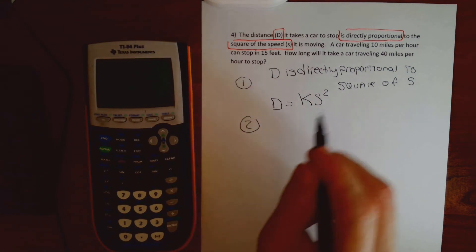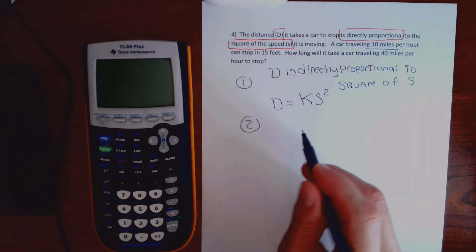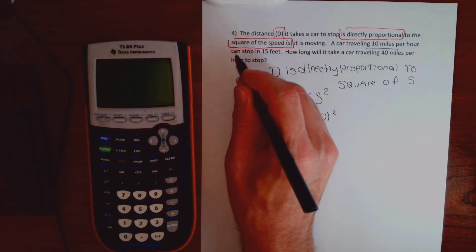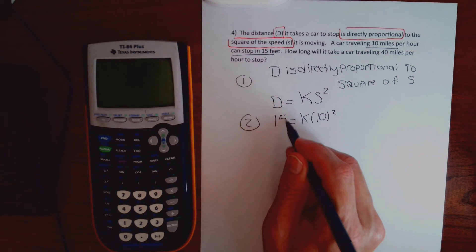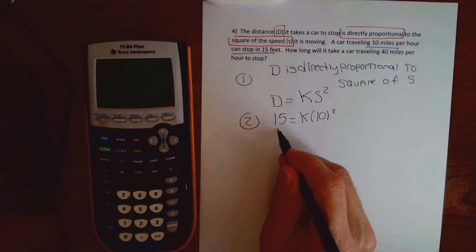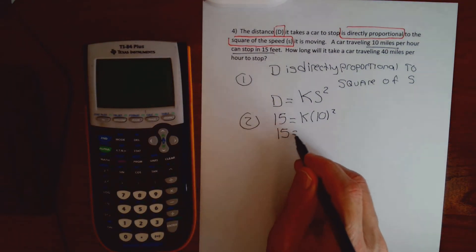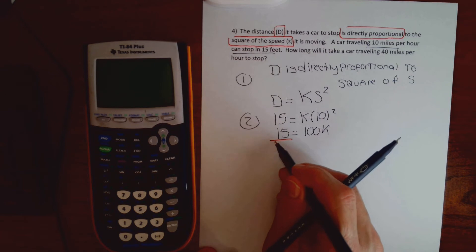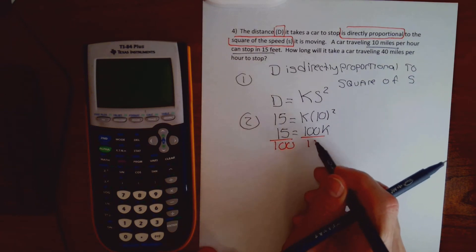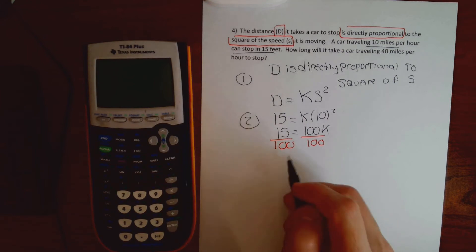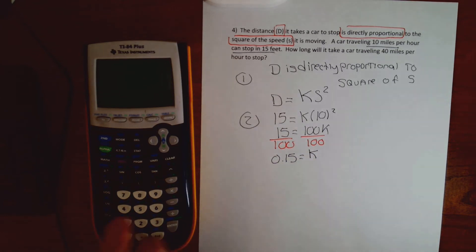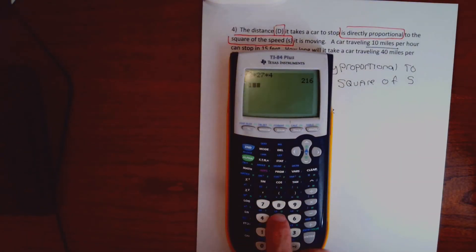Step two: a car traveling 10 miles per hour can stop in 15 feet. Plug 10 in for S and 15 in for D: 15 equals K times 100. Dividing, K equals 0.15. I write K as a decimal because it makes it easier to press calculator buttons, and it doesn't matter if you use a decimal or fraction when the decimal terminates.